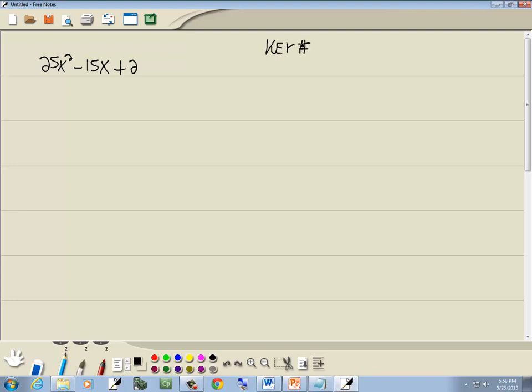It's actually a key number. A key number is when you have an x squared, x, no x, and there's a number in front of your x squared. Now we're going to take our number at the beginning times the number at the end, ignoring signs. 25 times 2 gives us 50.